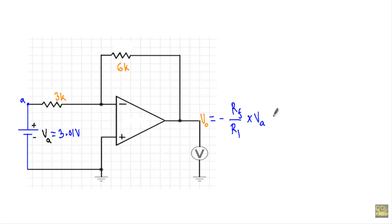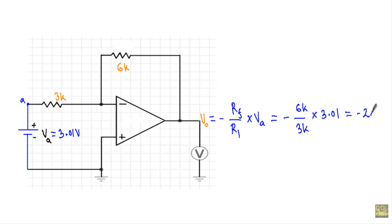Now for the output voltage: the feedback resistor is 6 kΩ and the bias resistor is 3 kΩ, giving a gain of minus 2. With VA = 3.01 volts, Vout = minus 2 × 3.01 = minus 6.02 volts. This calculation is coherent with the simulated result. Thank you.